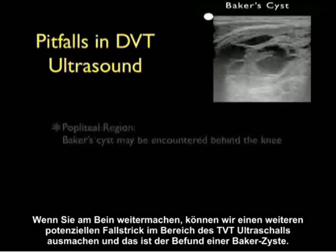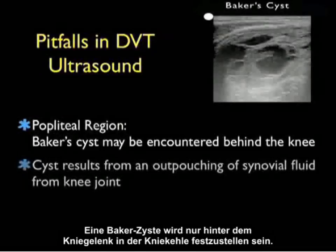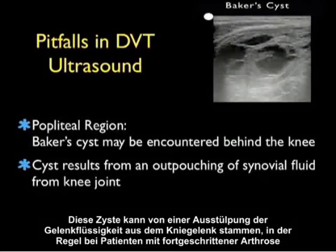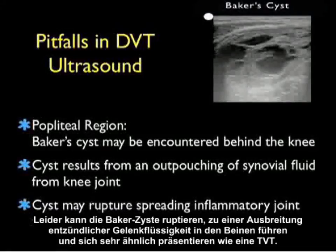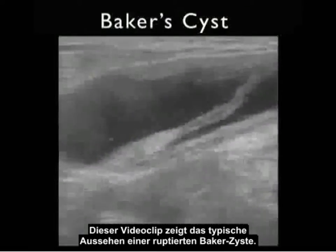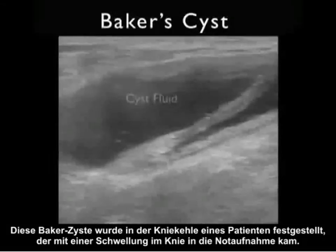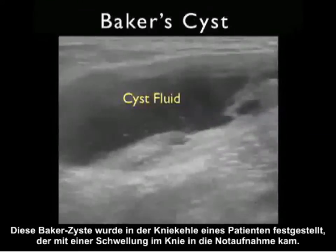As we progress down the leg, we can encounter another potential pitfall within DVT ultrasound — the alternative finding of a Baker's cyst. A Baker's cyst can be encountered just behind the knee within the popliteal region. This cyst can result from an outpouching of synovial fluid from the knee joint, usually in patients with advanced arthritis. Unfortunately, the Baker's cyst can rupture, spreading inflammatory joint fluid down the leg and presenting very similarly to a DVT. This video clip demonstrates the typical appearance of an unruptured Baker's cyst found in the popliteal region of a patient referred to the emergency department for a swelling behind the knee.